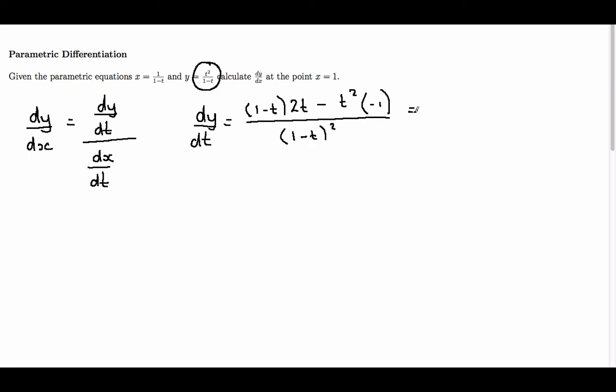Looking at the top of the fraction and expanding it out, I get 2t minus 2t squared, and then minus minus gives me plus t squared.